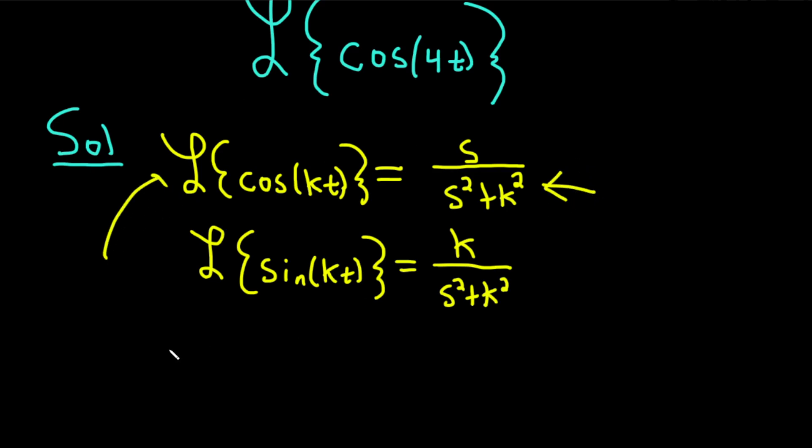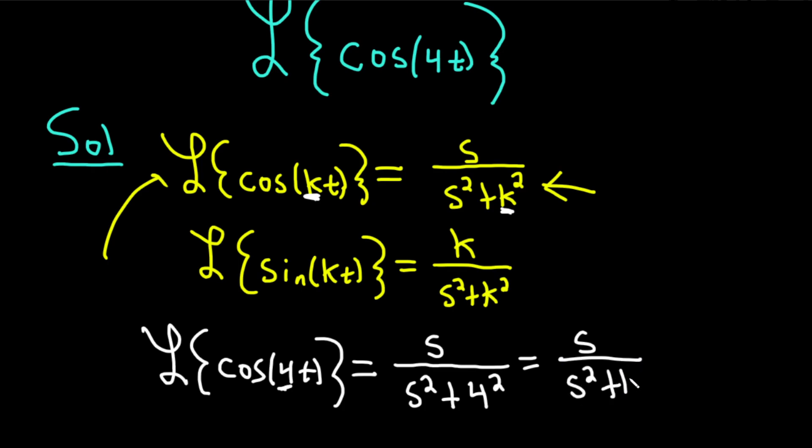So we have the Laplace transform of the cosine of 4t. So our k is 4. So it's equal to s, because cosine has the s, over s squared plus, and then k is 4, right? So 4, so it's 4 squared. So this is equal to s over s squared plus 16.